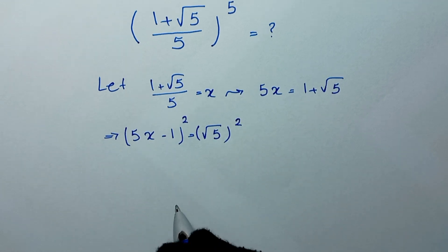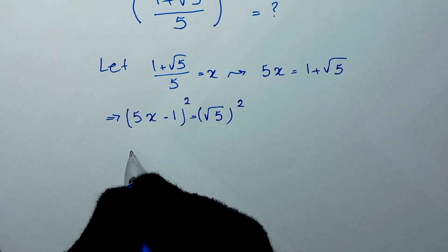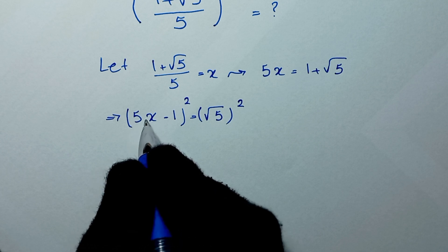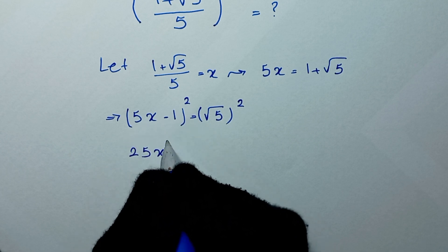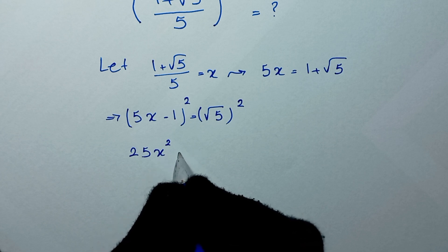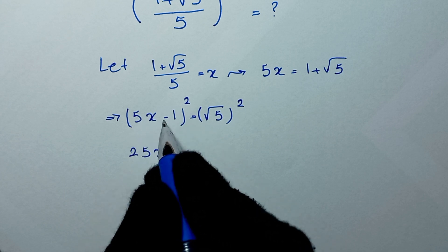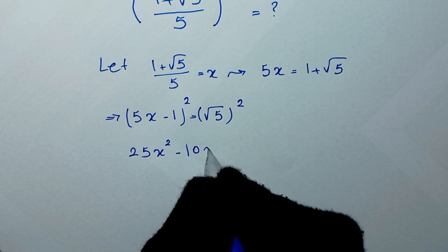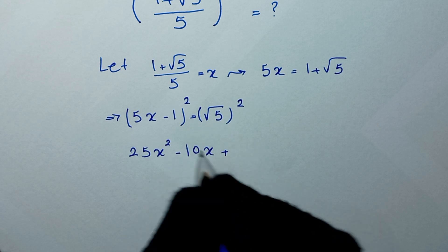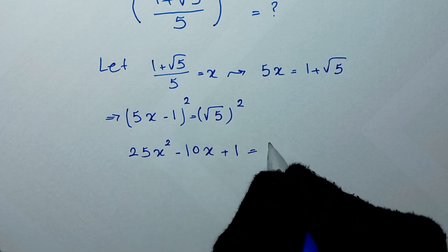So here, (5x minus 1) squared gives us 25x squared minus 2 times 5x times 1, which is negative 10x, and plus 1 squared, which is 1. This equals square root of 5 squared, which is 5.